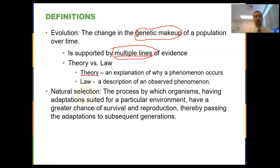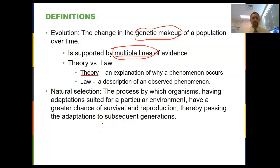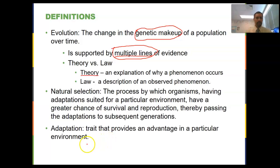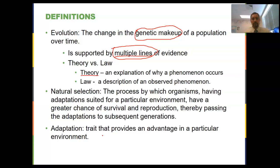The process that causes evolution is natural selection — this is the driving factor. Natural selection is the process by which organisms having adaptations suited for a particular environment have a greater chance of survival and reproduction, thereby passing those adaptations to subsequent generations. Basically, some organisms survive better in a particular environment, so they're more likely to reproduce and pass those traits on to the next generation. An adaptation is any trait — a specific genotype leading to a specific phenotype — that provides an advantage in a particular environment.